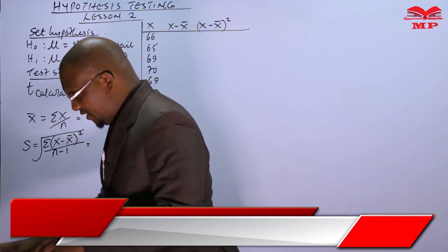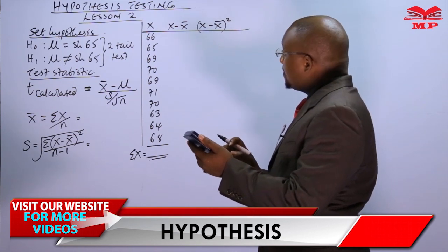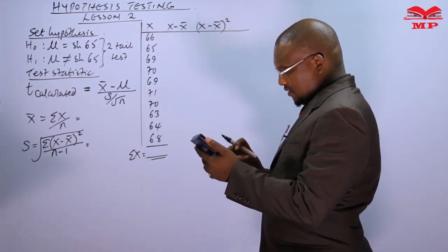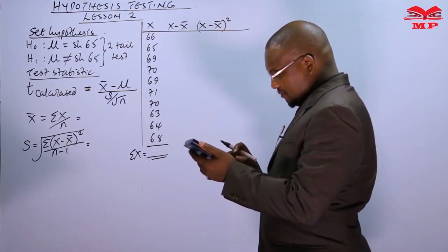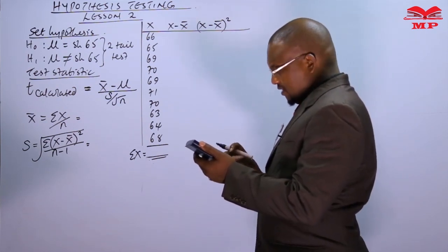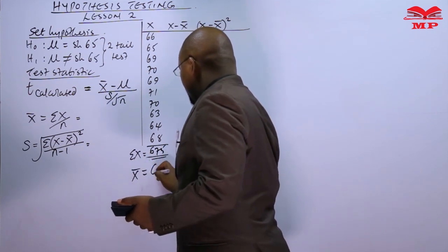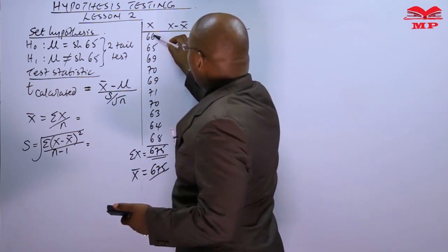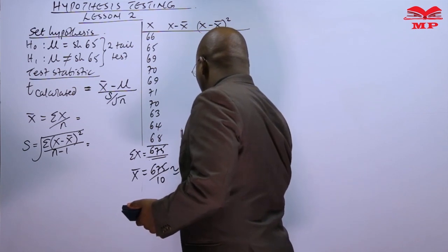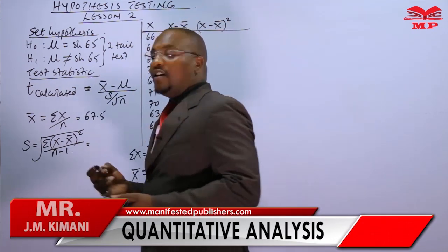To find x-bar, we sum all values: 66 + 65 + 69 + 70 + 69 + 71 + 70 + 63 + 64 + 68 = 675. Then x-bar equals 675 divided by 10, which gives us 67.5. We record 67.5 as our sample mean.